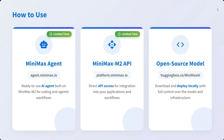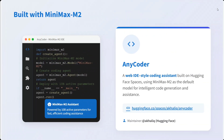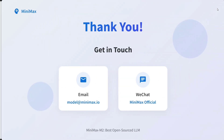How to use it: go to agent.minimax.io — as I showed, it was free to use. You can test out the AI agent built using MiniMax M2. The MiniMax M2 API is also available, and the model is open source. It can be deployed using sLang, vLLM, or MLX. Recommended inference parameters: temperature default, top_p = 0.95, top_k = 240. Applications built with MiniMax Agent include AnyCoder, a web IDE-style coding assistant built in Hugging Face Spaces.